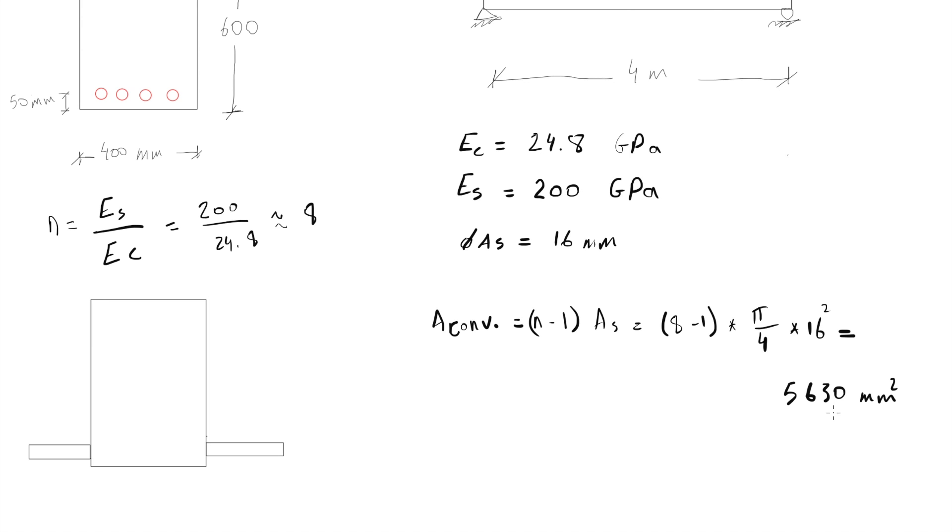That means we have 5,630 mm² of concrete at the right and the left of the concrete section in order to achieve the same stiffness in the case we have the steel rebars there. So dividing on two sides, it means 2,815 mm² on each side of the beam.